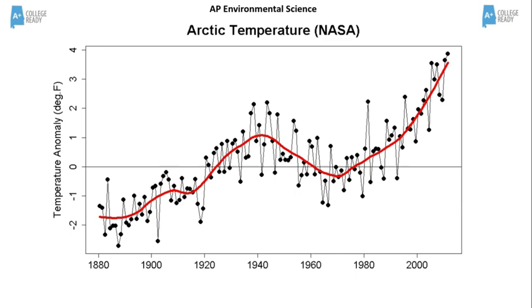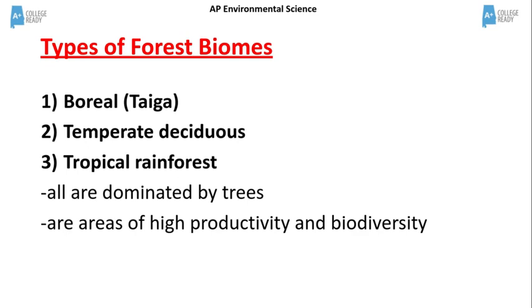There are three basic types of forest biomes: the boreal forest, also called the taiga; the temperate deciduous forest; and the tropical rainforest. All forest biomes are dominated by trees and are areas of high productivity and biodiversity.